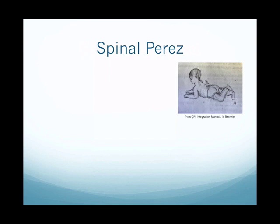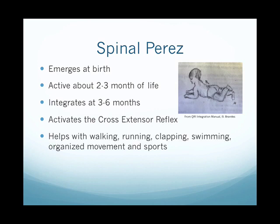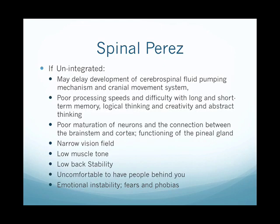I borrowed this picture from the QRI integration manual from Bonnie Brandes, because I thought it was a really good illustration of how, when you activate the spinal Perez in the upper back, it starts to elicit the movement of the feet — called the cross extensor reflex. It emerges at birth, is active for about two to three months of life, and integrates at three to six months. It activates the cross extensor reflex, helping to prepare the baby to crawl, and it helps with walking, running, clapping, swimming, and organized movements and sports.